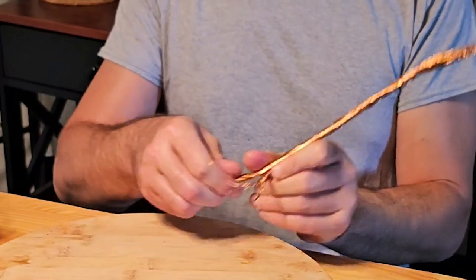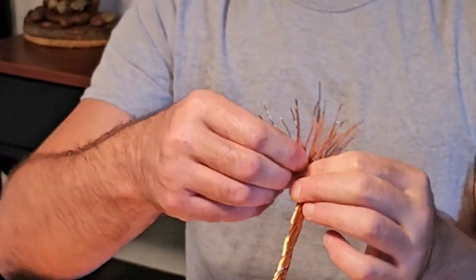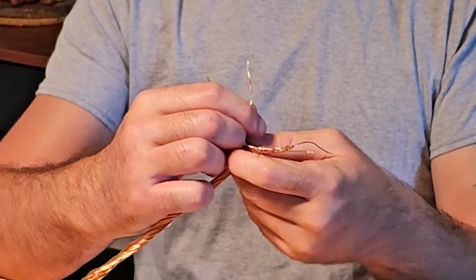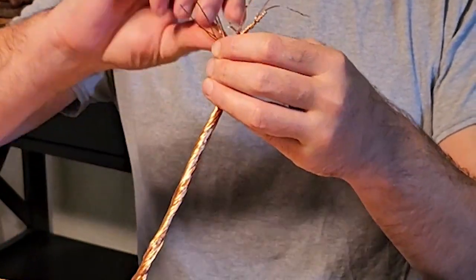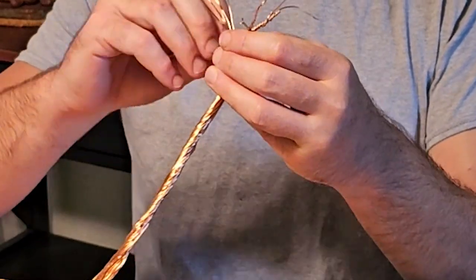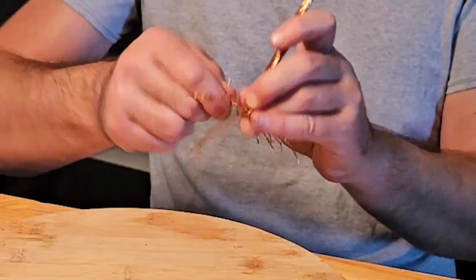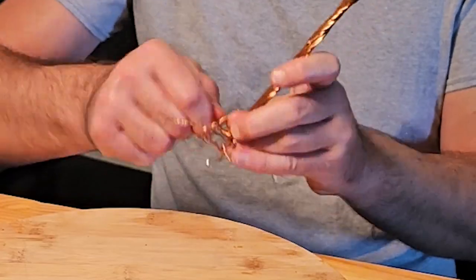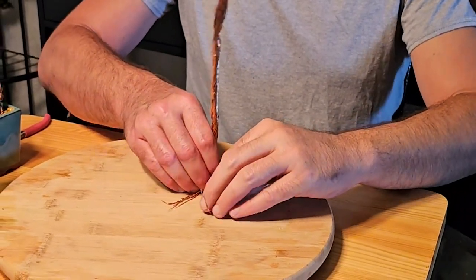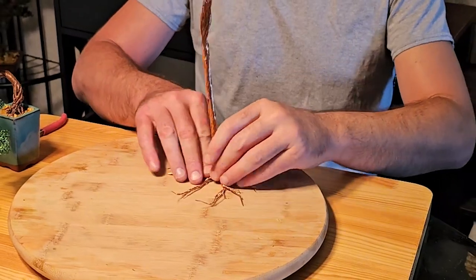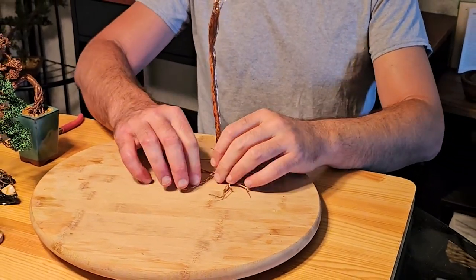You start to ramify them out, just like you would the branches. And twist tightly, and we flatten them a little, just to get our shape.